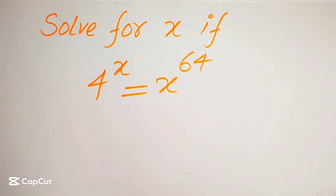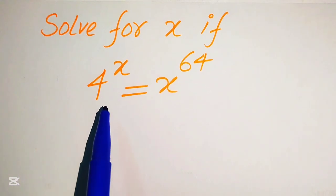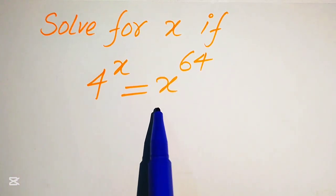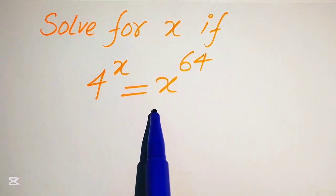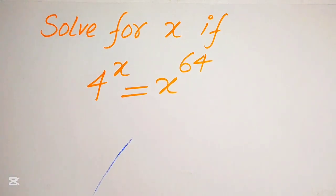Hello everyone, welcome to solve this nice math Olympiad algebra problem. We have 4 to the power of x equals to x to the power of 64, and we will solve this problem for the values of x.